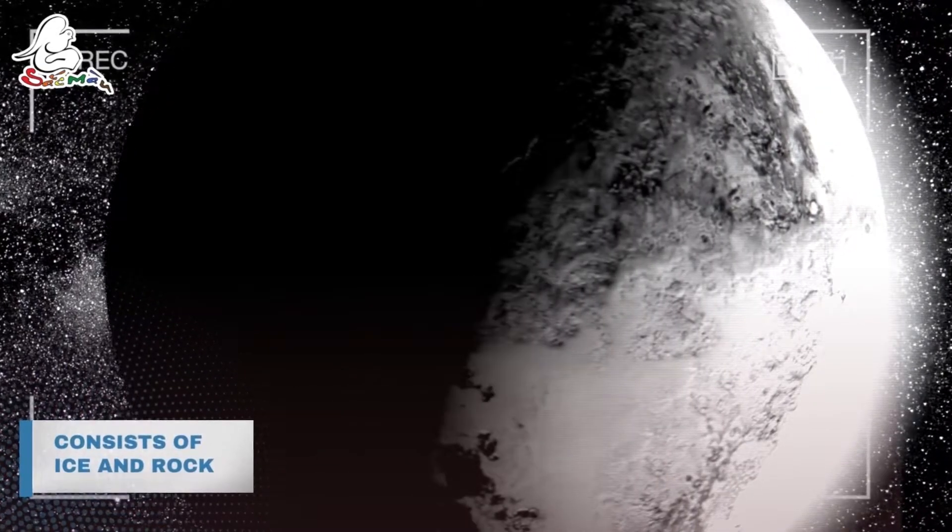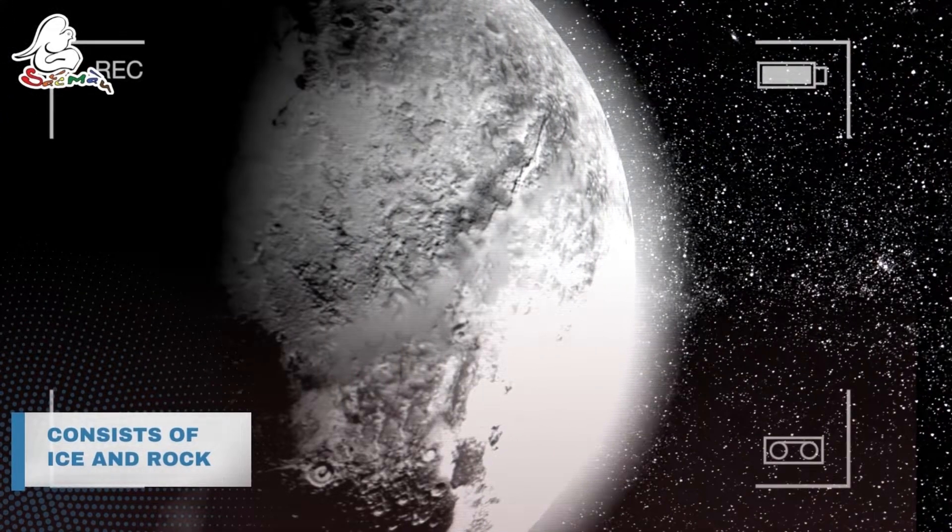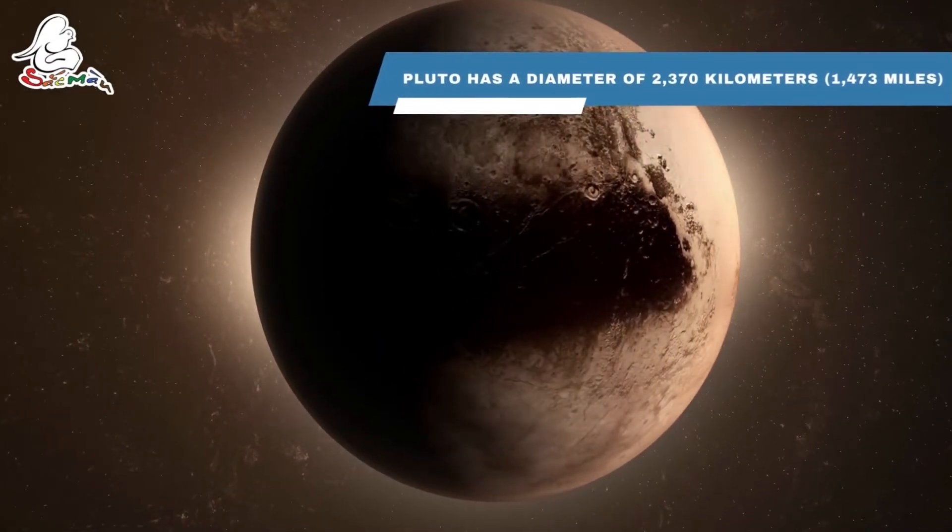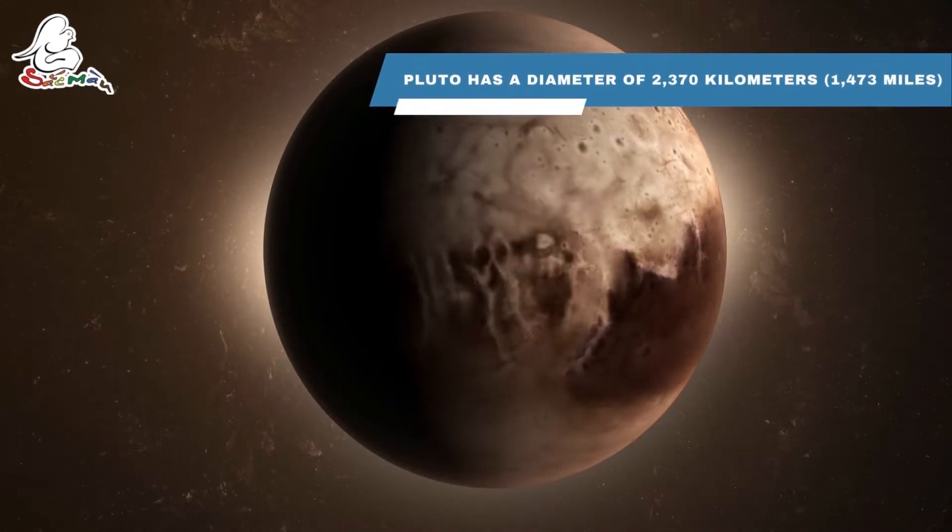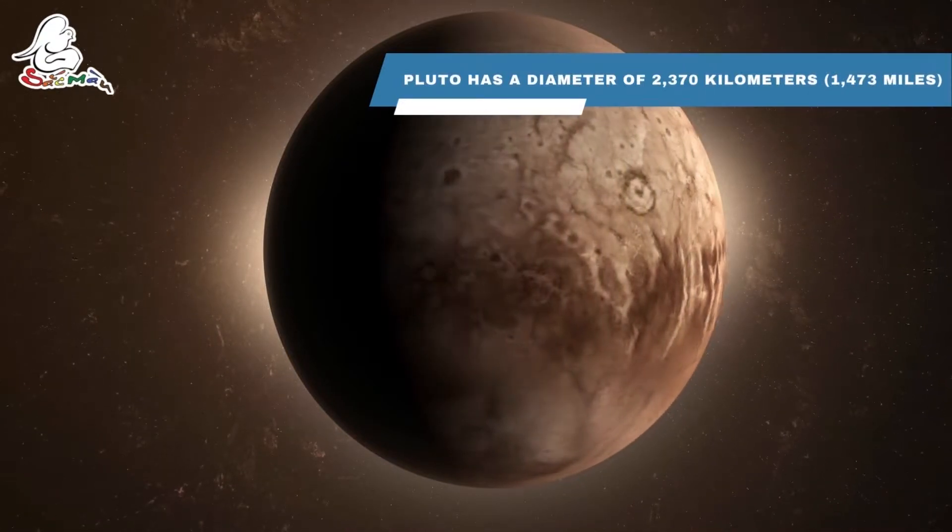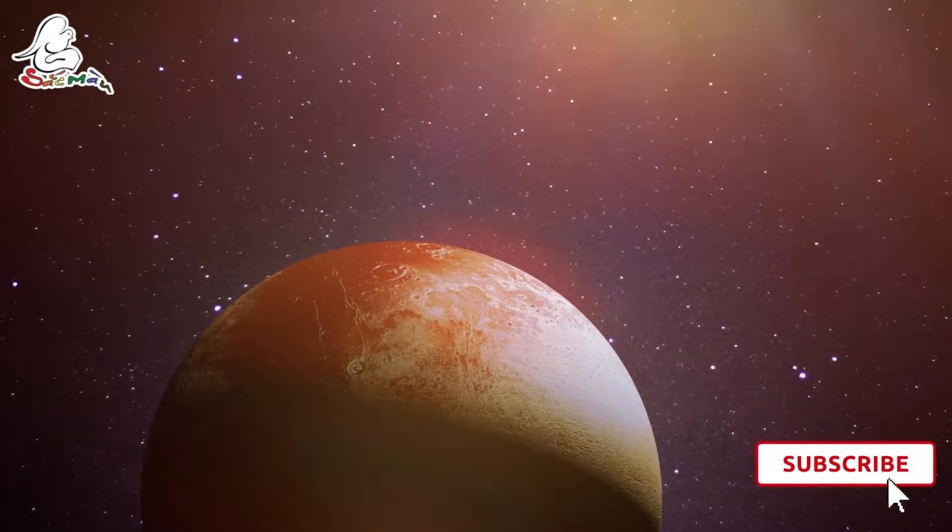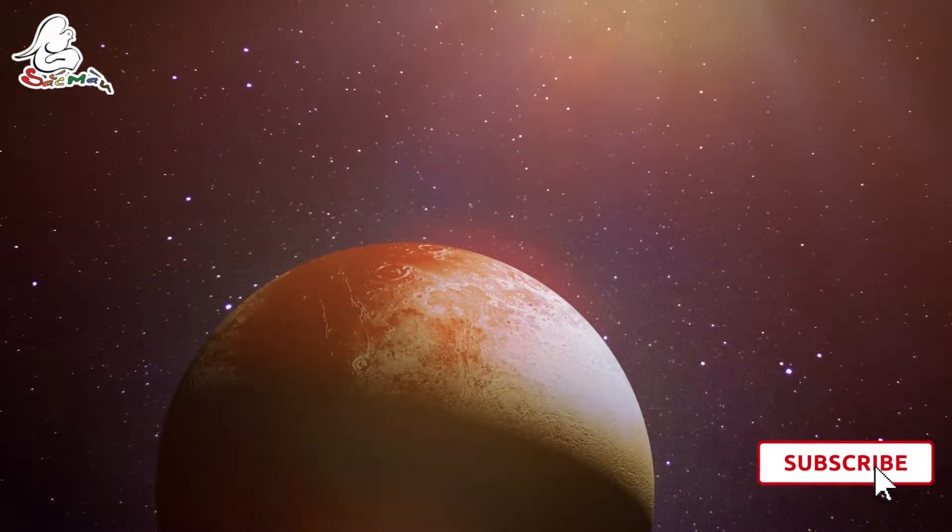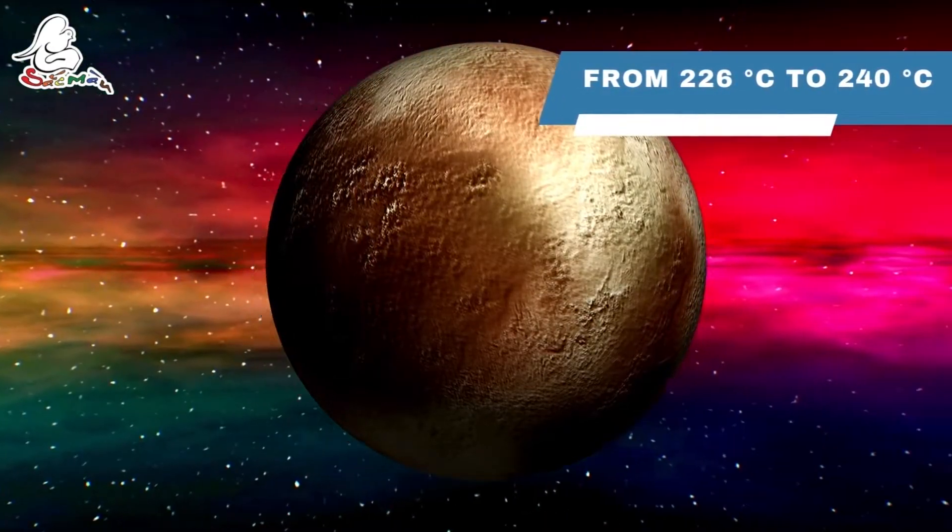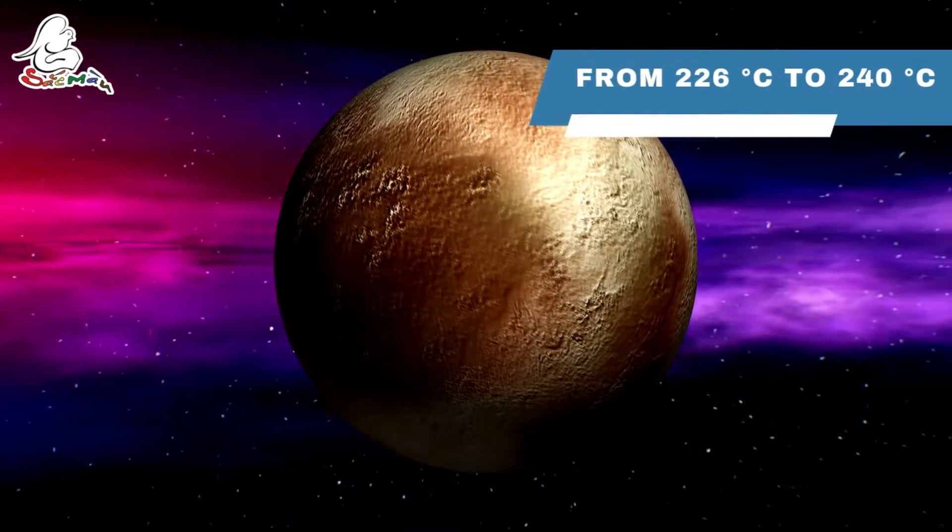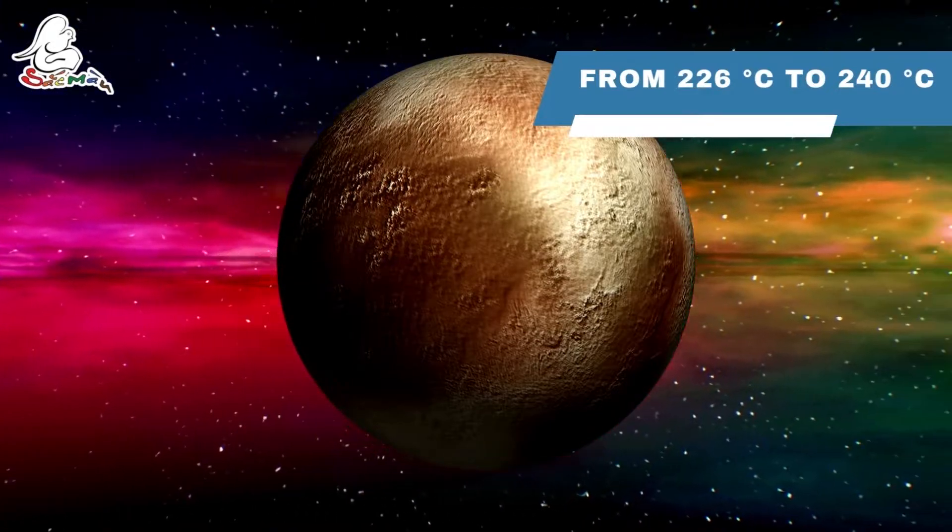The planet mainly consists of ice and rock, and it has a rocky core surrounded by a mantle of water ice. Pluto has a diameter of 2370 km, is 5 times smaller than Earth, and is nearly 1.5 times smaller than Earth's moon. Although it is not a striking size, it is the largest known object in the solar system outside Neptune's orbit. In addition, Pluto is one of the coldest places in the solar system, with temperatures ranging from 226 degrees Celsius to 240 degrees Celsius.